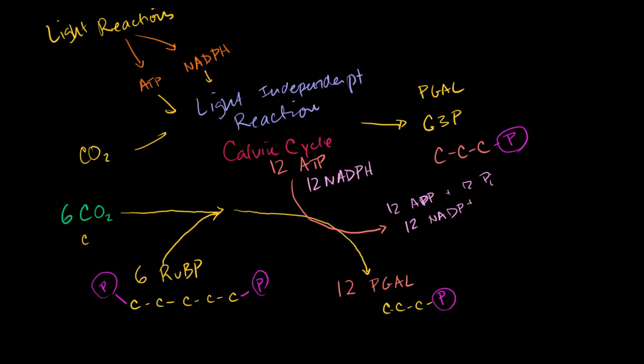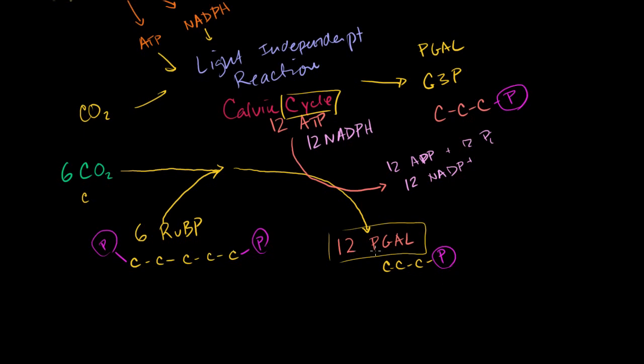So then we have these 12 PGALs. Now the reason why it's called a Calvin cycle, as you can imagine, we studied the Krebs cycle. Cycles, we start reusing things. The reason why it's called the Calvin cycle is because we do reuse most of these PGALs. So of the 12 PGALs, we're going to have 10 PGALs, 10 phosphoglyceraldehydes, 10 PGALs we're going to use to recreate the ribulose biphosphate. And the counting works. Because we have 10 3-carbon molecules, that's 30 carbons. Then we have 6 5-carbon molecules, 30 carbons.